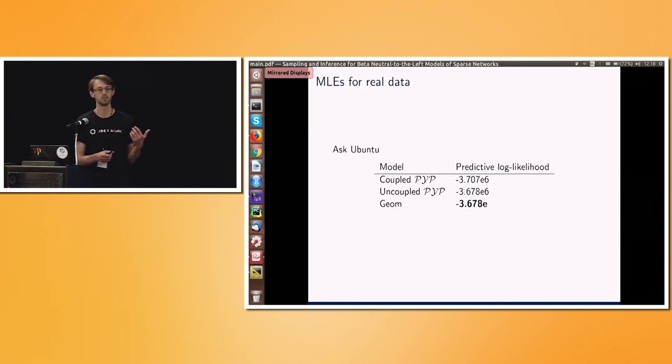And finally, we took that Ask Ubuntu data set and a number of others, which I showed you earlier on, and we fitted point estimates for a number of models. So here we have the Pitman-Yor process, well, two variants of it, which I could go into details later. But really, what we found was that those Pitman-Yor processes are not well specified for this data.